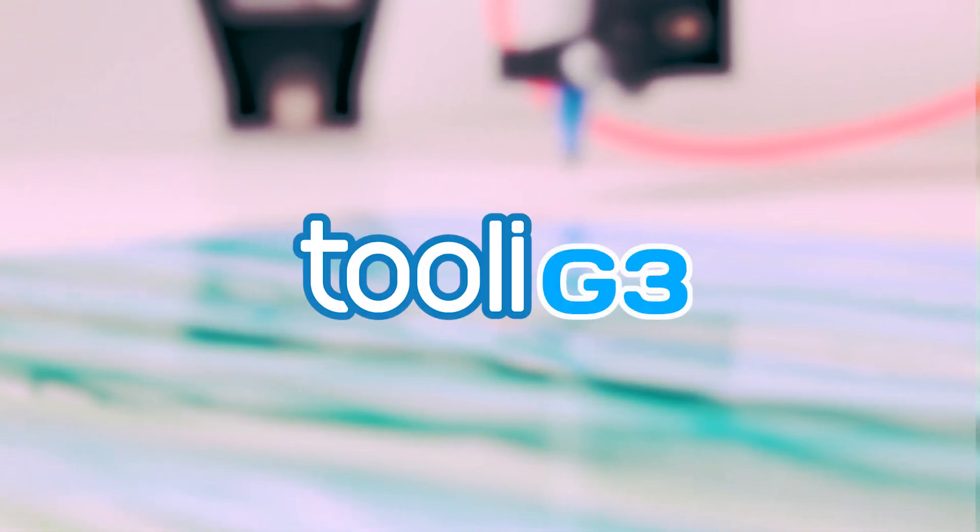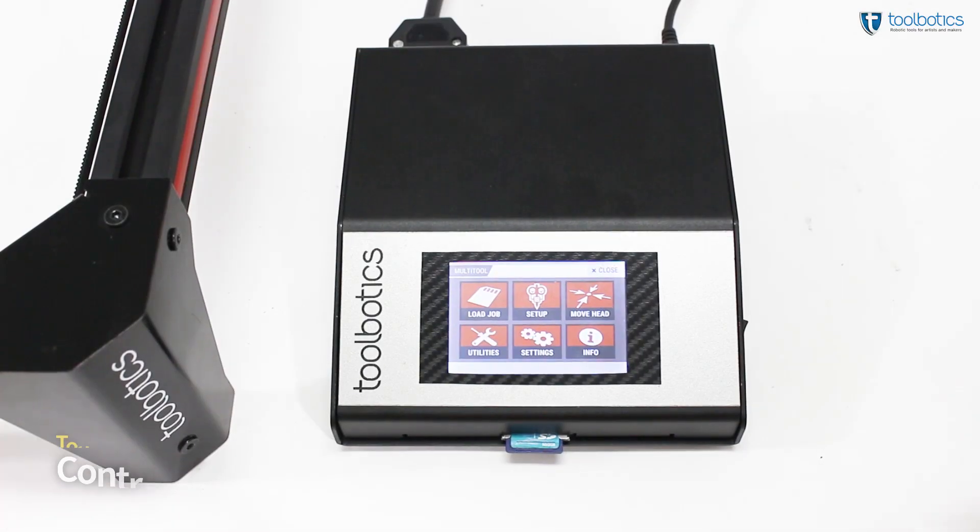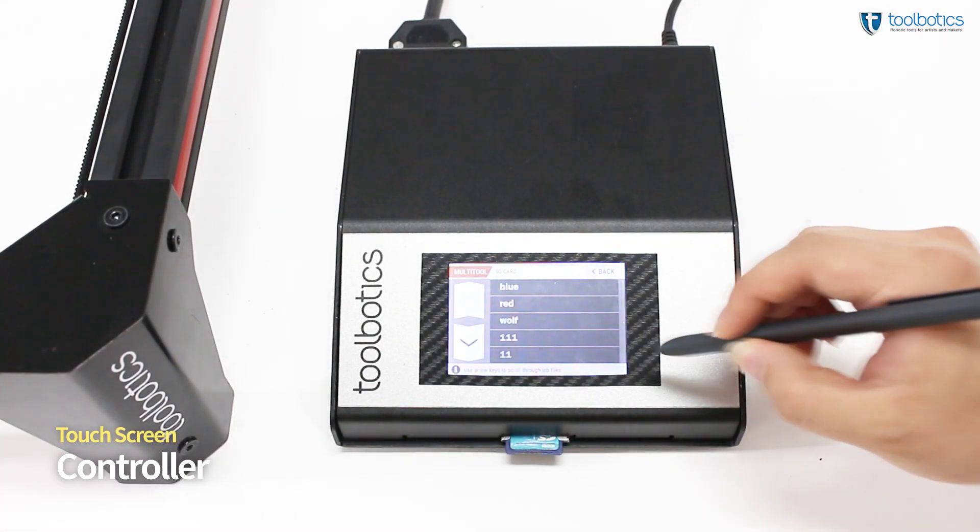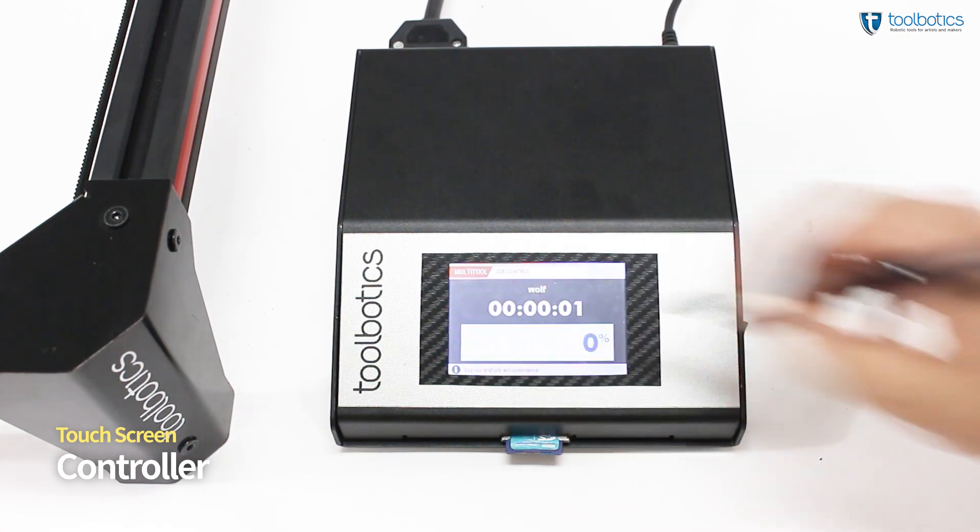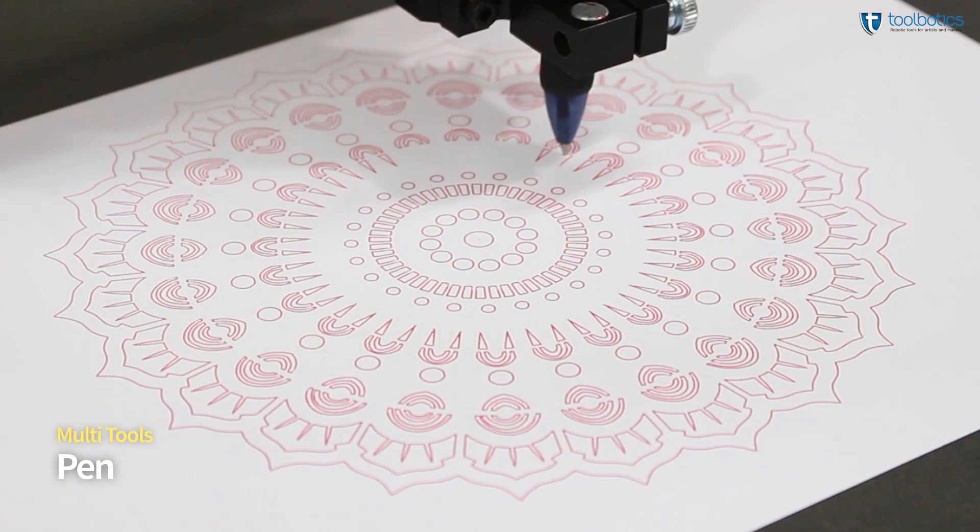Introducing TULI G3, a one-of-a-kind robotic multi-tool for artists and makers. The third generation of TULI G3 features a state-of-the-art touch screen controller along with 12 features in one machine.